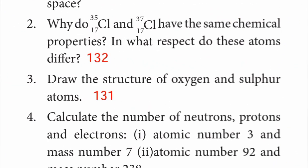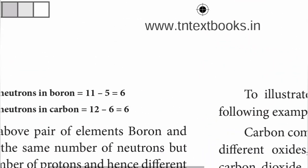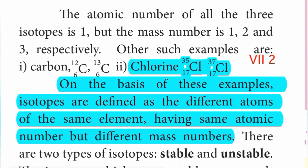Second question: why do chlorine-35 (atomic number 17) and chlorine-37 (atomic number 17) have the same chemical properties? In what respect do these atoms differ? Page No. 132. Isotopes are defined as different atoms of the same element having the same atomic number but different mass numbers. Same atomic number but different mass number — these are isotopes.